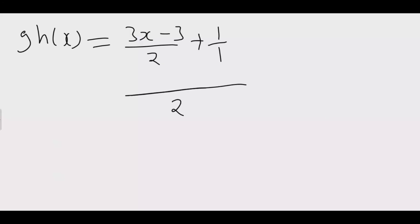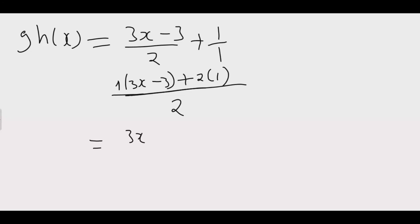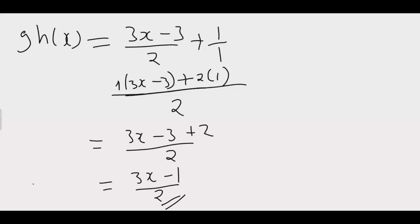Using 2 as the common denominator: 1 times (3x minus 3) plus 1 times 2, all over 2 — giving 3x minus 3 plus 2 over 2, which simplifies to 3x minus 1 over 2. So g of h of x equals 3x minus 1 over 2.